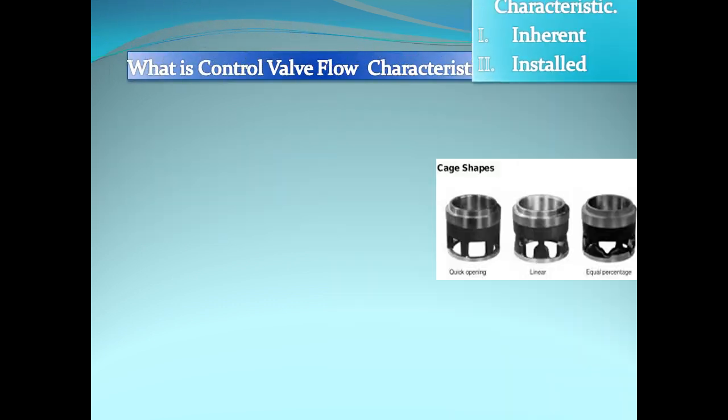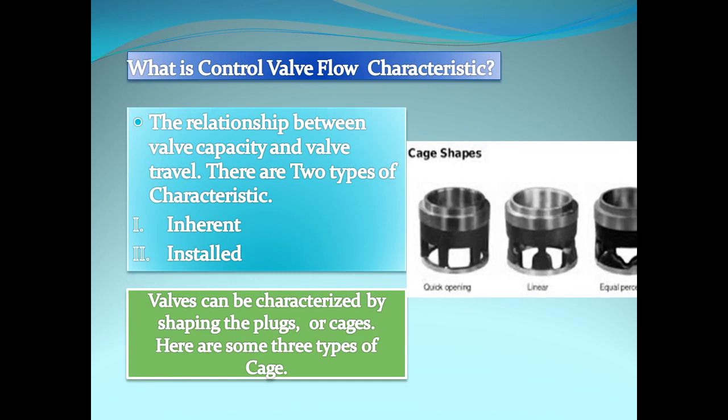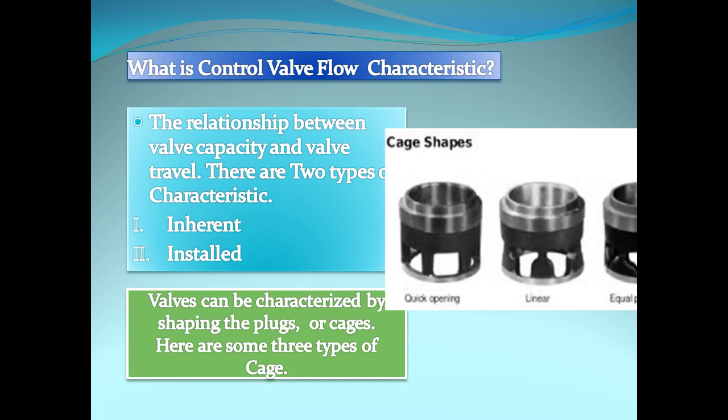What is control valve flow characteristic? The relationship between valve capacity and valve travel. There are two types of characteristics: inherent characteristic and installed characteristic. Valves can be characterized by shaping in plugs or gates. Here are three types of gates: quick opening, linear, and equal percentage.